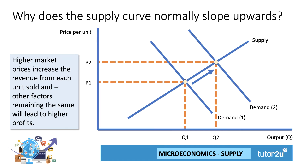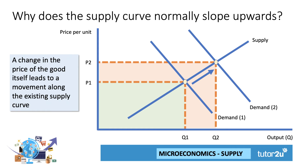The higher market price increases the revenue from each unit sold, and other factors remaining the same, that's going to lead to higher revenues and profits for the supplier. You can show the initial revenue in a shaded green area at price P1 and Q1, and at the higher price and quantity there's an increase in revenue shown by the orange area. That's one reason why the supply curve slopes upwards — higher prices act as an incentive and signal to producers they can make more money. The change in the price of the good itself causes a movement along the existing supply curve; it doesn't cause a shift in the supply curve.